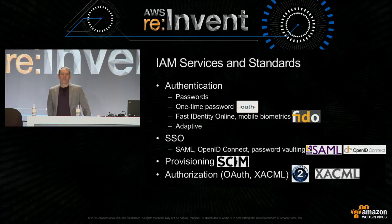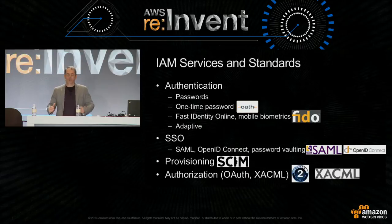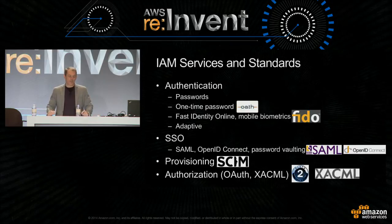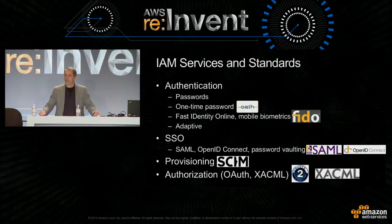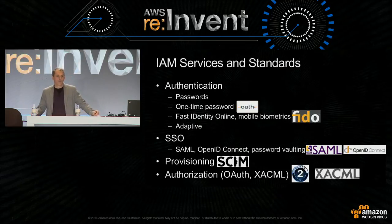I want to touch upon a couple of IAM concepts. I'm not going to talk about SAML and OpenID Connect and OAuth yet, but just to level set: there's authenticating users. We can authenticate them with passwords, or with one-time password devices on your mobile device—that's OATH. OATH is something AWS uses for its virtual MFA technology, and it's also used by Google, which is why you can use a Google Authenticator with AWS.